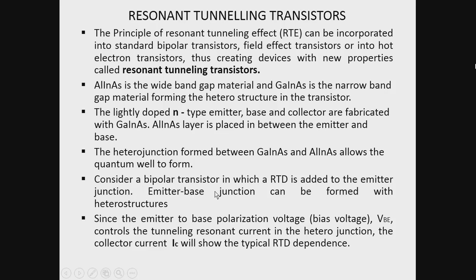The emitter-base junction can now be formed with heterostructures, because there are two semiconductor materials — Gallium Indium Arsenide and Aluminium Indium Arsenide — which act as a heterojunction. Since the emitter-to-base biasing voltage VBE controls the tunneling resonant current in the heterojunction, the collector current IC will also show a typical resonant tunneling diode dependence. Thus, IC will also follow the resonant tunneling effect.